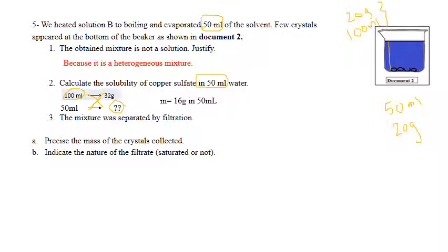So it equals 16 grams. Therefore the mass equals 16 grams in 50 milliliters - this is the new solubility in 50 milliliters. The mixture was separated by filtration. Precise the mass of the crystals collected.